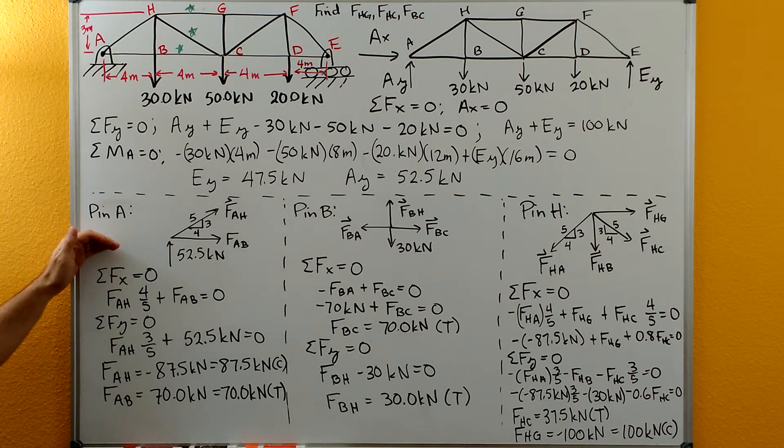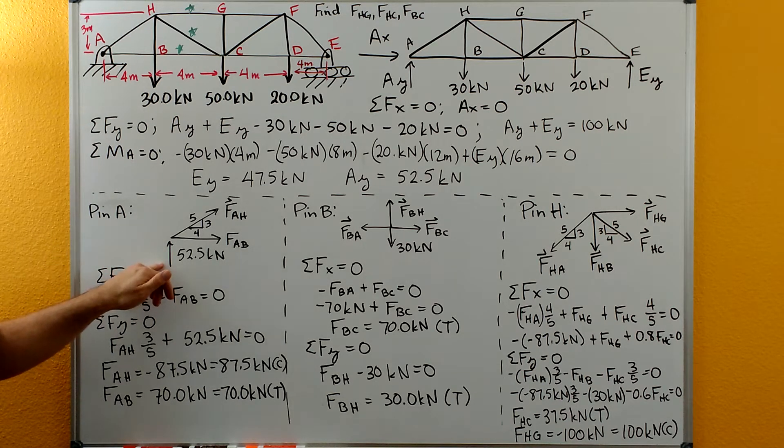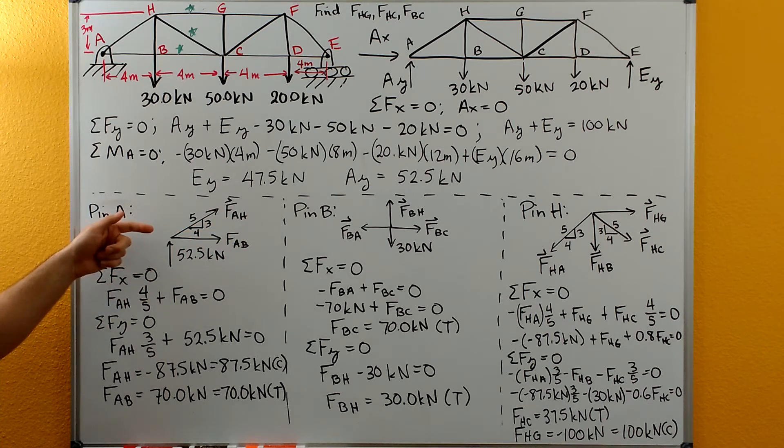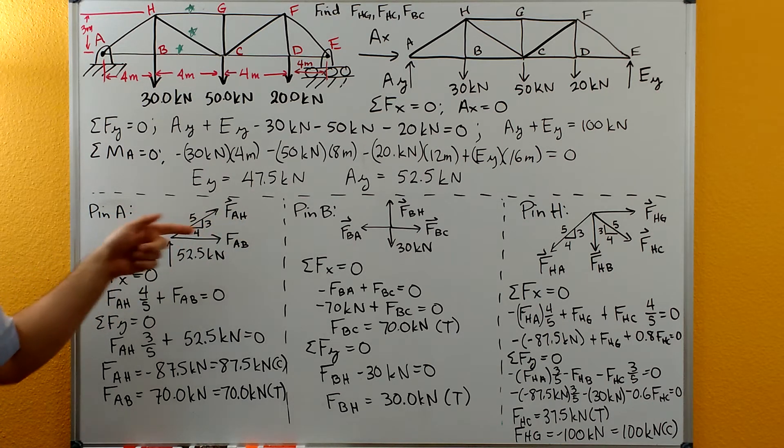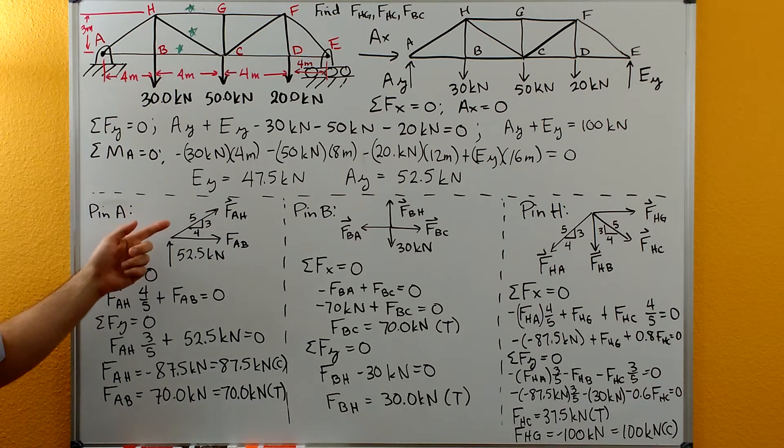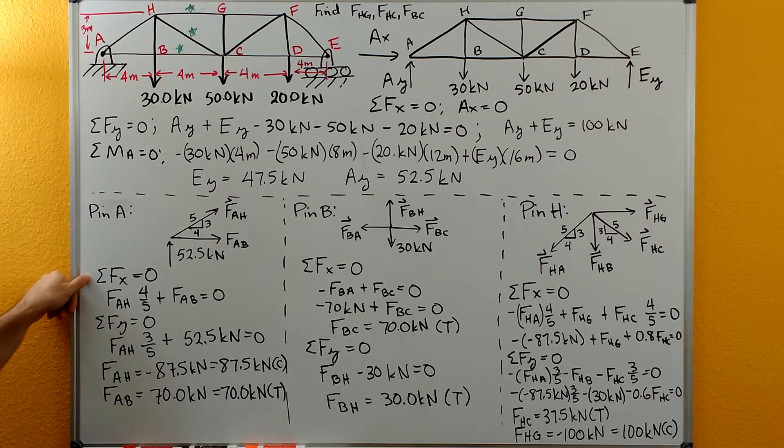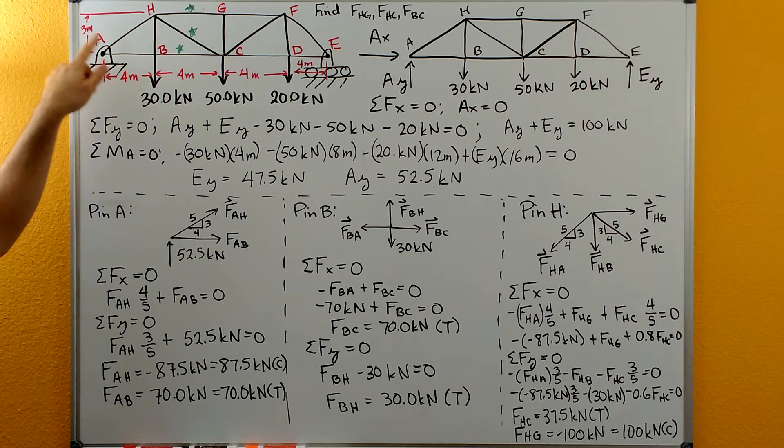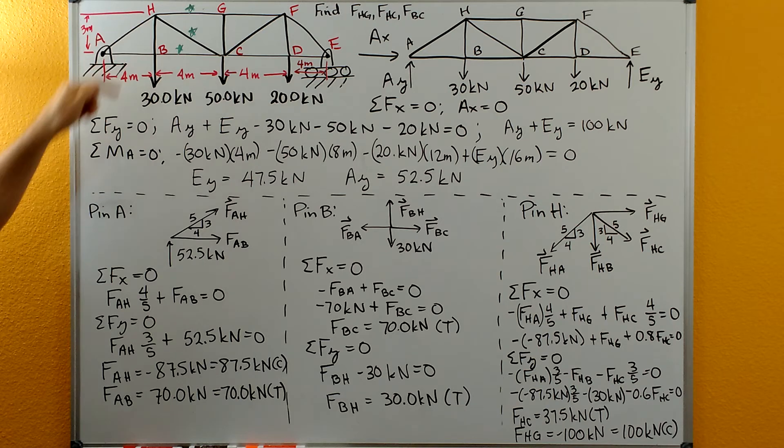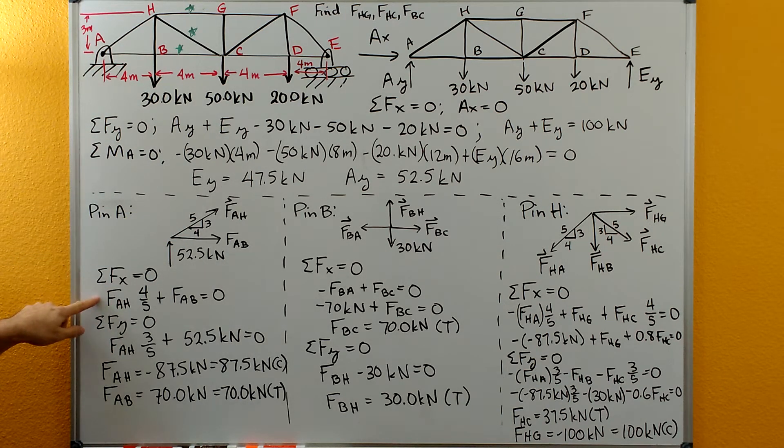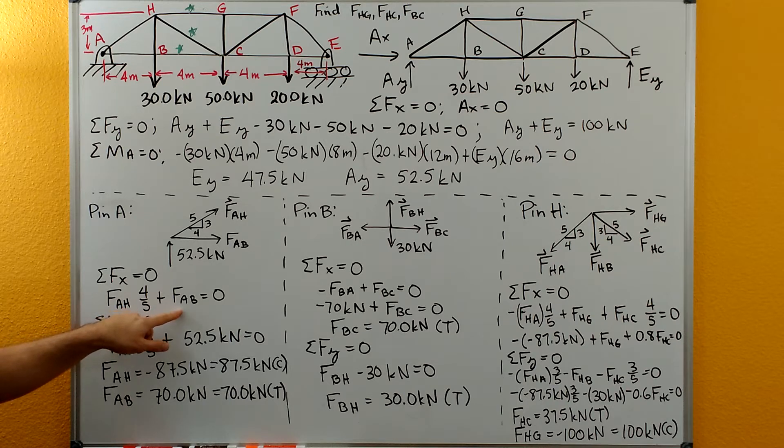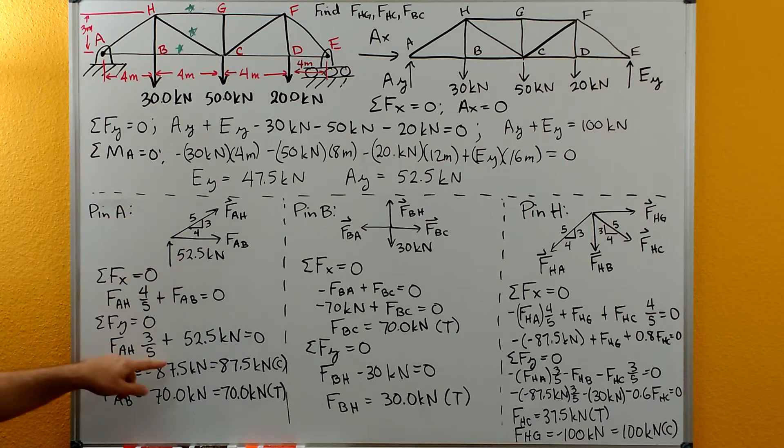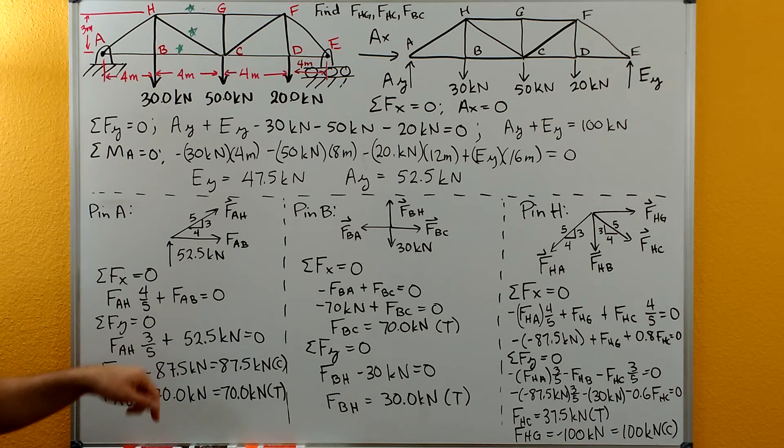Here's our free body diagram for pin A. We have AY that acts on A, and then we have FAB that's an unknown and FAH that's an unknown. We're going to draw everything as if it's in tension. So FAB is pulling on A towards B. FAH is pulling on A towards H. We do our sum of forces in X equals zero. We get that the four-fifths FAH just from the dimensions here. For AH we're over four, up three, so it's a three-four-five right triangle. So FAH times four-fifths plus FAB equals zero. Sum of forces in Y: we get FAH times the three-fifths side plus the 52.5 kilonewtons here equals zero.